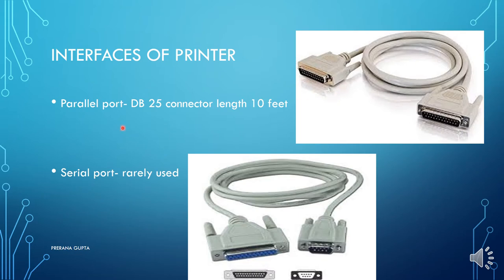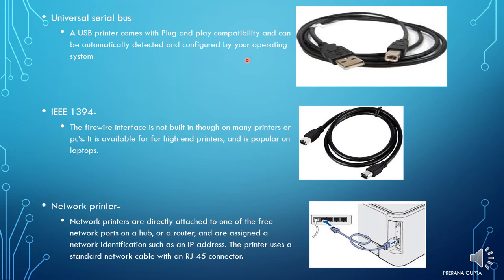The parallel port uses a DB25 connector with a cable length of 10 feet. Serial port cable length is 10 feet or more, but these are not used anymore — earlier printers used serial ports, but not nowadays. USB gives the advantage of plug and play: when you connect this USB cable to your printer, it is automatically detected. You don't need to configure the operating system or restart.